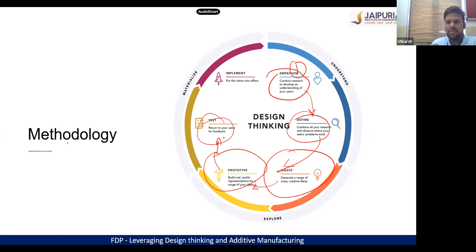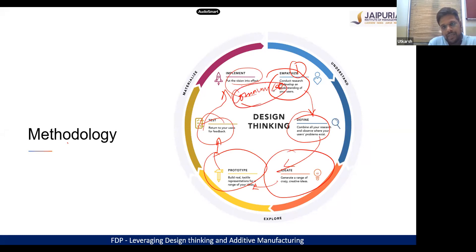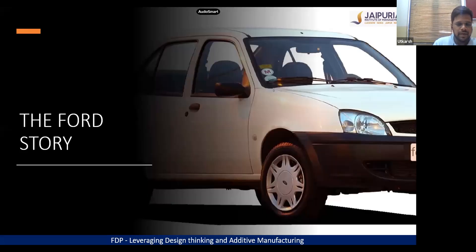The sixth stage, which has been added to this, is very important — from testing we go to something known as implementation. And with implementation comes the power of communication, so we have to communicate at this stage. This is what the sixth stage is: starting from empathizing, defining, ideation, prototype, testing, and implementing. Now let's understand all these stages one by one, and we'll start with empathizing first.